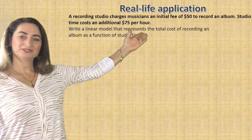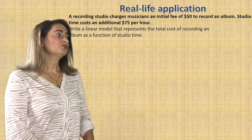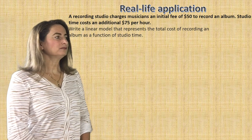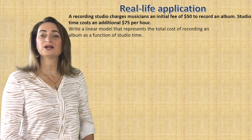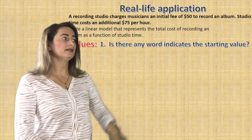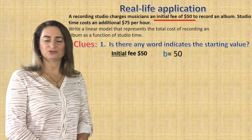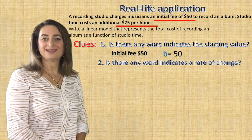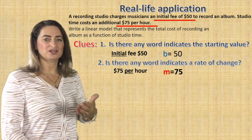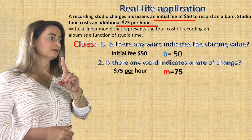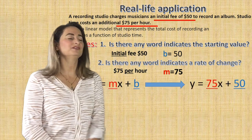A recording studio charges musicians an initial fee of $50 to record an album. Studio time costs an additional $75 per hour. Write a linear model that represents the total cost of recording an album as a function of studio time. The word 'initial' tells us b equals 50, the y-intercept. The word 'per' tells us the slope m equals 75 — it shows the ratio between the cost and the number of hours. So the equation y equals mx plus b becomes y equals 75x plus 50.